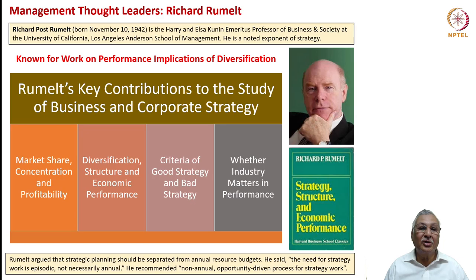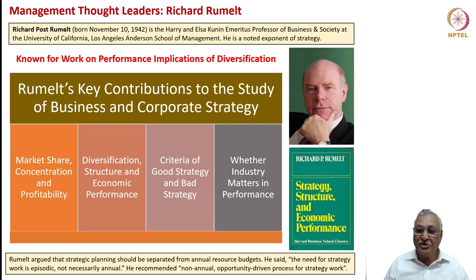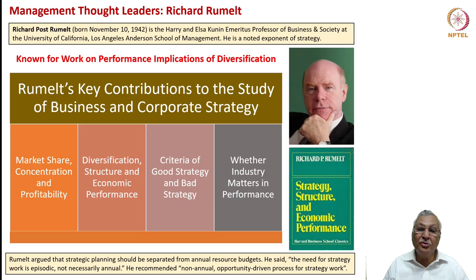Richard Rumelt is a strategic leader who worked on performance implications of diversification. He came up with a great thesis: Strategy, Structure and Economic Performance. He said market share concentration and profitability are very important components of business and corporate strategy, but there are limits to market share, concentration, and profitability if you are stuck in a single industry. He examined the necessity of diversification, matching structure for diversification, and resultant economic performance. He also laid down criteria for good strategy and bad strategy, and argued that strategic planning should be separated from annual resource budgets, stating that the need for strategy work is episodic and not necessarily annual.